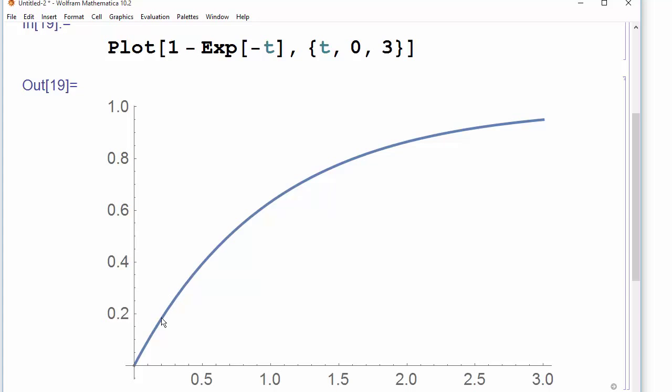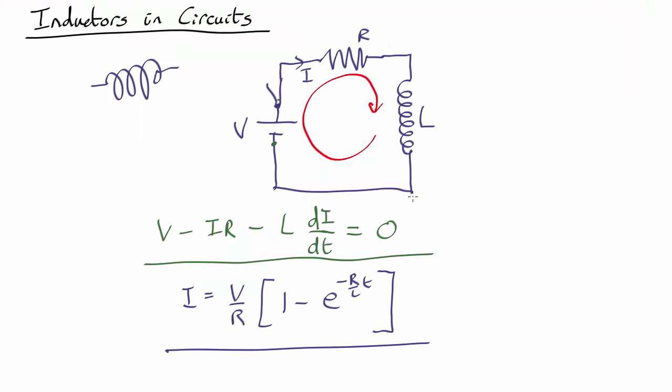So what's happening is as the current increases, you're getting more and more voltage drop across the resistor. So to begin with, there's almost no voltage drop across the resistor because the current is very small. So all that's happening is your voltage here is being opposed by the voltage generated by the inductor. So this is fighting back as fast as it can. So the equation just has this bit removed.